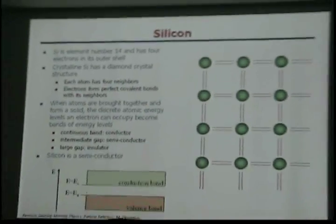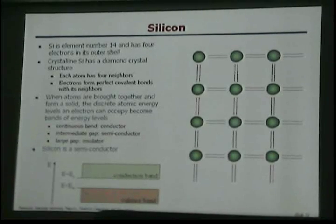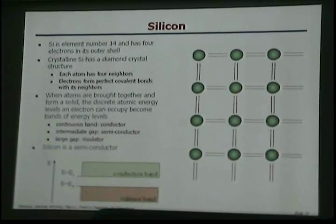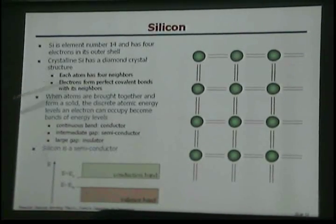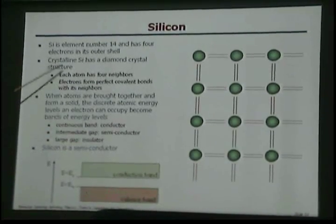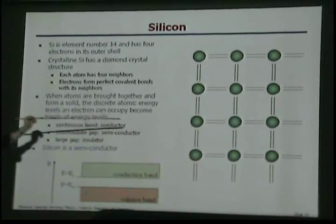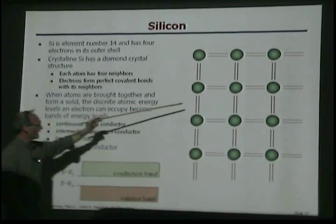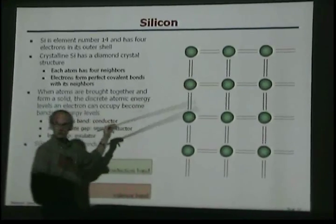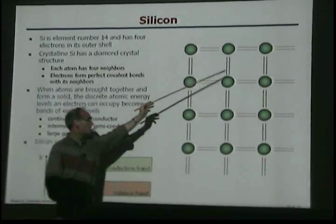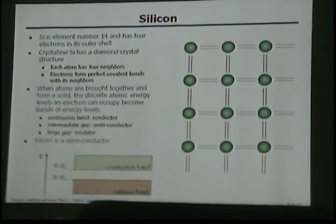So let's look at silicon. Silicon is element number 14, has four electrons in its outer shell, and has a diamond crystal structure. Each atom has four neighbors and four perfect covalent bonds.